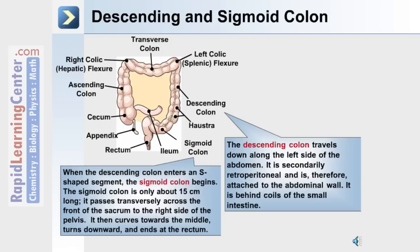After the descending colon is the sigmoid colon. When the colon enters an S-shaped segment, the sigmoid colon begins. This section is approximately 15 centimeters long. It passes transversely across the front of the sacrum to the right side of the pelvis, then curves towards the middle, turns downward, and ends at the rectum.